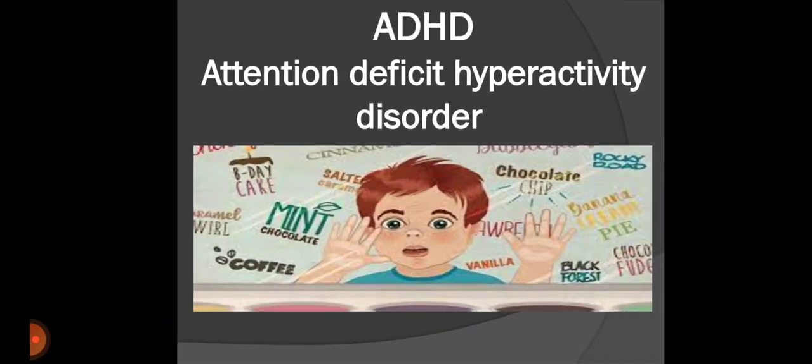Next, we have attention deficit hyperactivity disorder. This is the most common neurodevelopmental disorder of childhood. The children with this may have trouble paying attention or controlling impulsive behaviors and have hasty actions. The children cannot concentrate on one thing for longer periods.